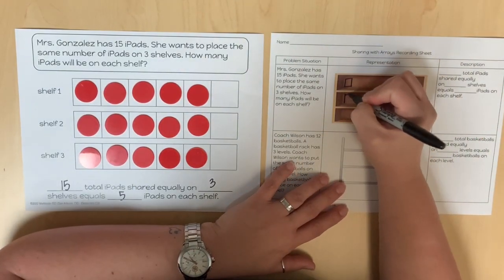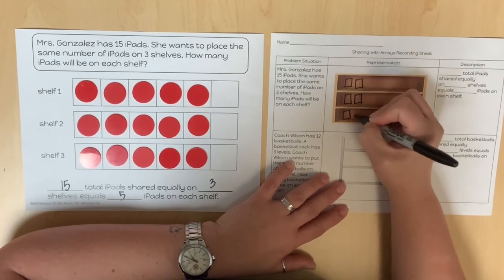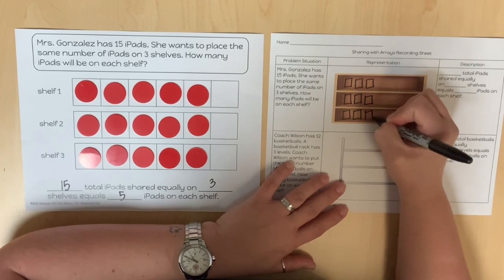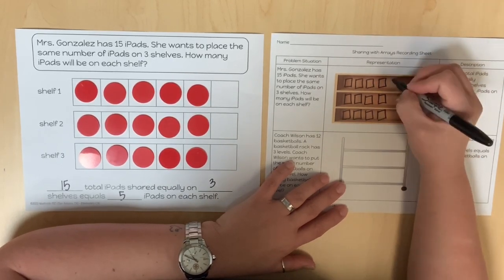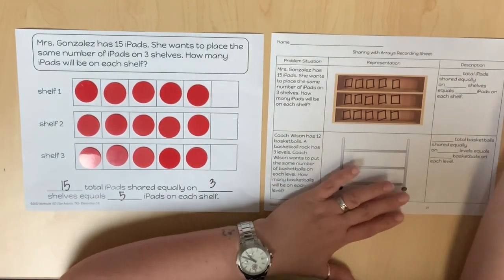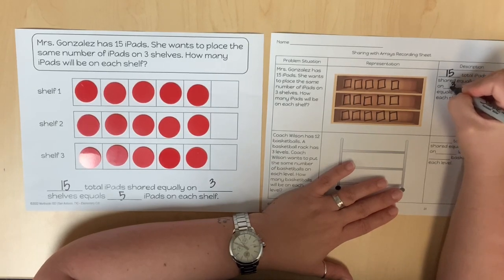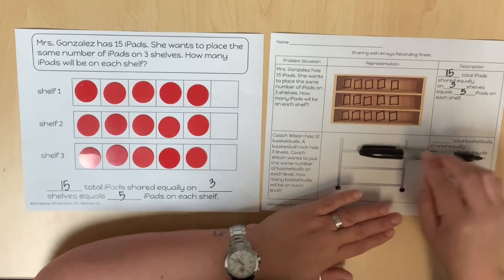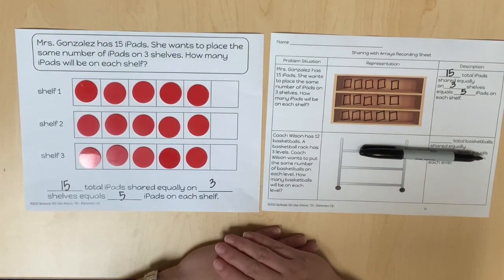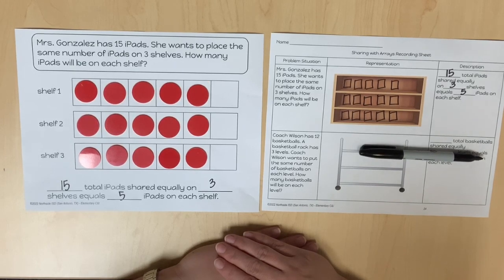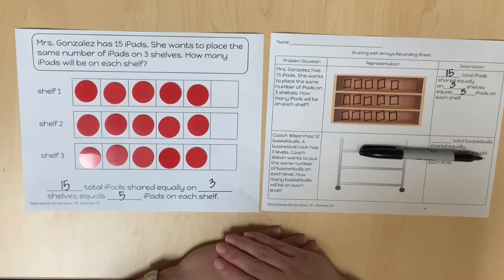Transition to the sharing with arrays recording sheet where students show a representation of the iPads shared equally. Discuss similarity: whether sharing or joining equal groups, the groups must be equal in size. Discuss the difference: when sharing iPads equally, we start with a known total and determine the number in each group or row; when joining equal groups, we determine an unknown total. Connect how joining three equal groups of five iPads equals 15 total, and 15 iPads shared on three shelves equals five per shelf.